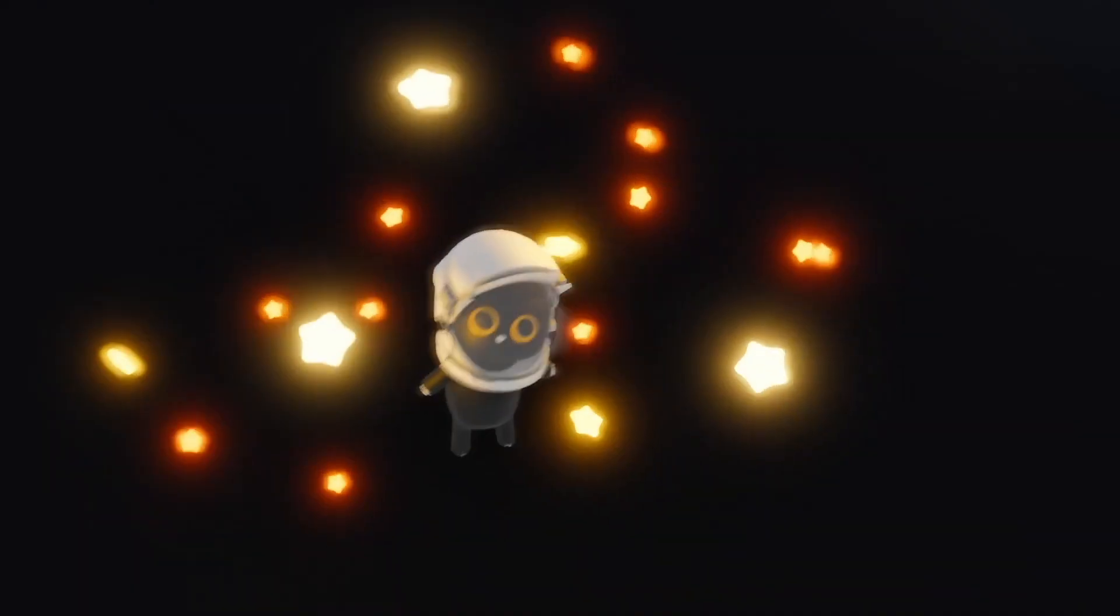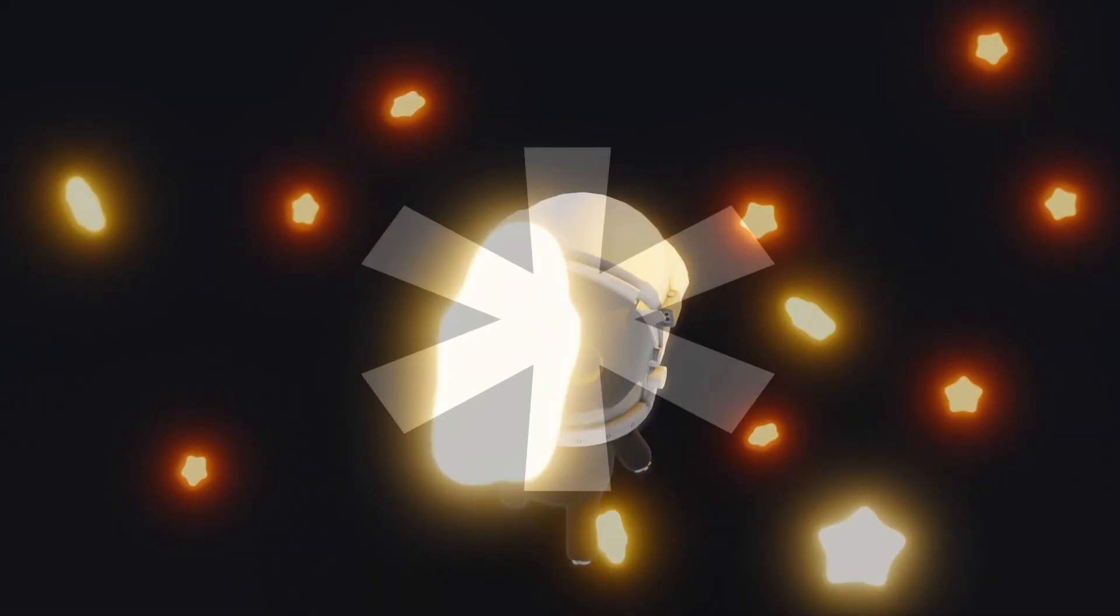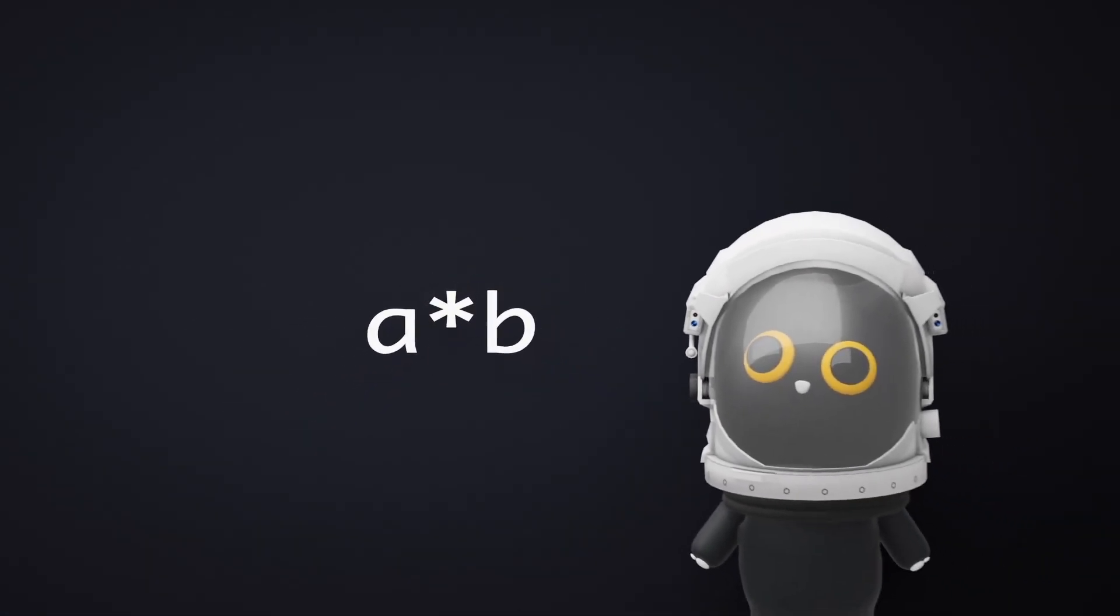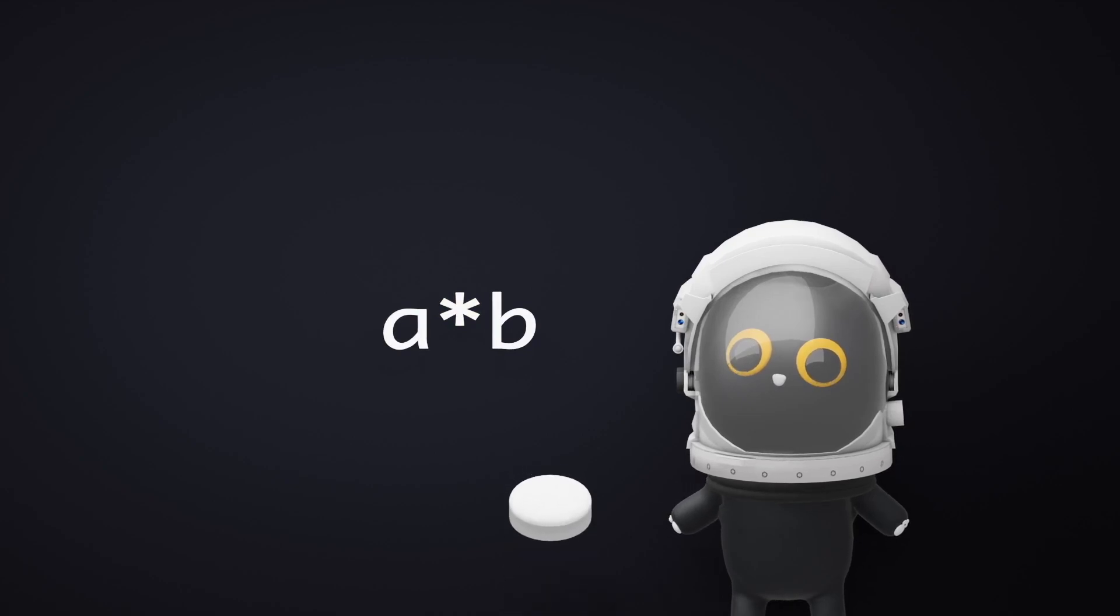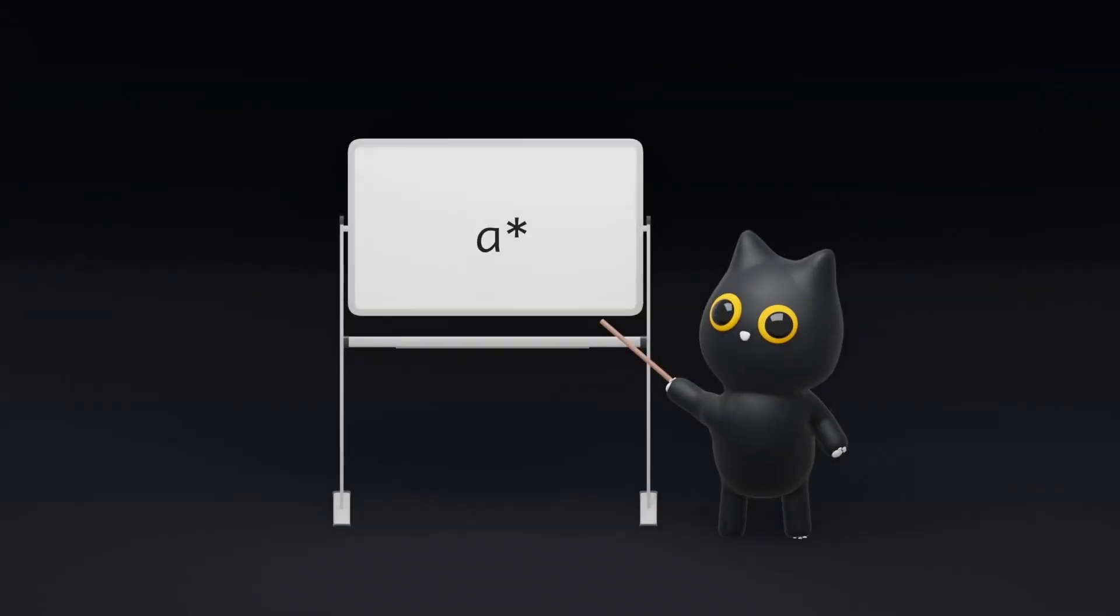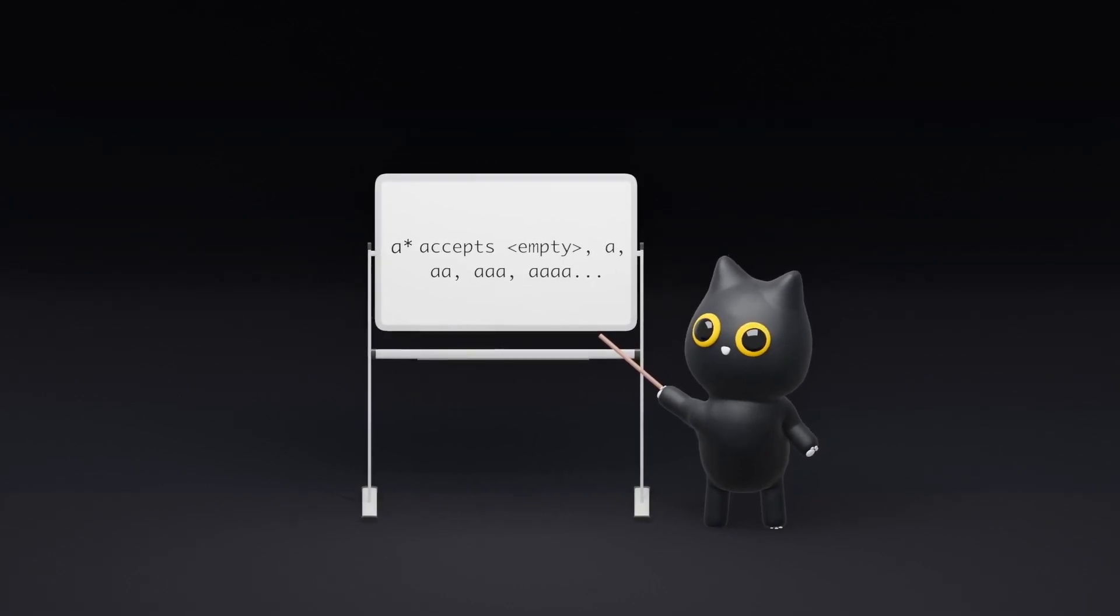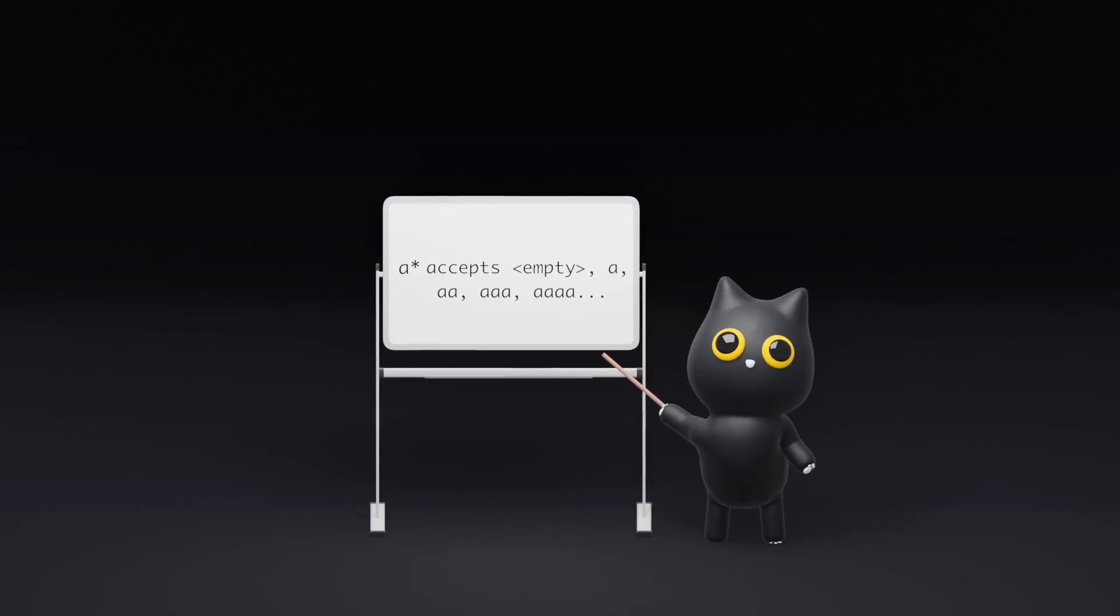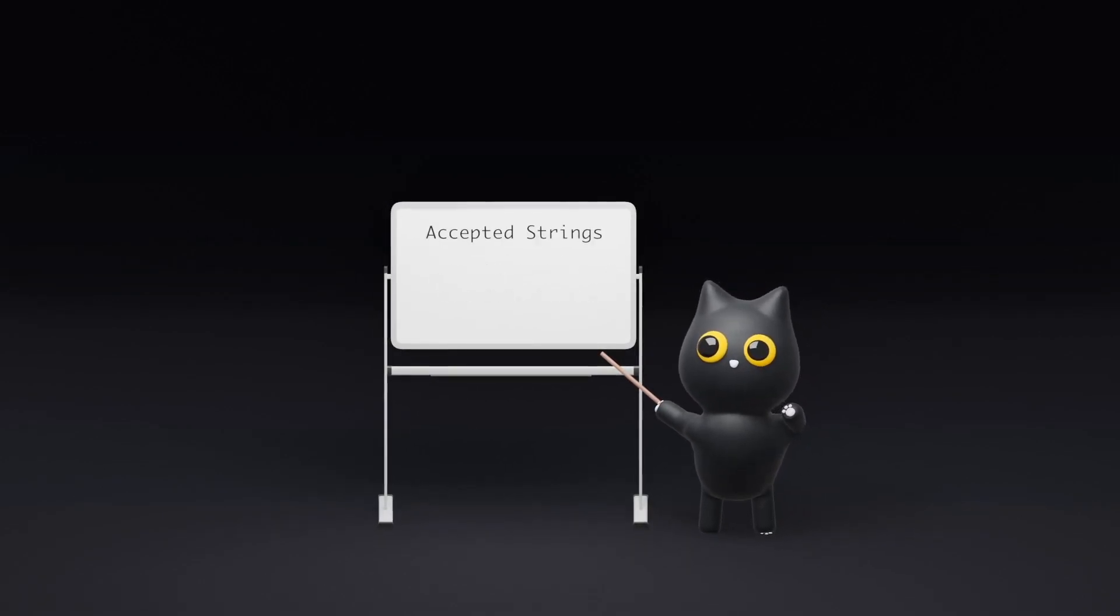I would like to end off this video with one more interesting example involving the Kleene star operator. Imagine we have a regular expression A star B instead. What does the star even mean? What would our DFA look like? This star right here means the character before can occur 0 or more times. So, A star represents 0 or more A's. Here, let us think about what strings the machine will accept.